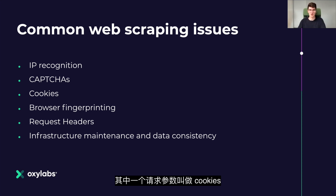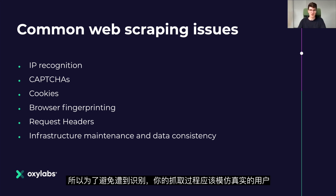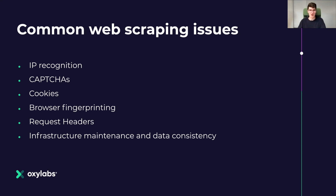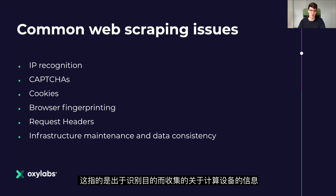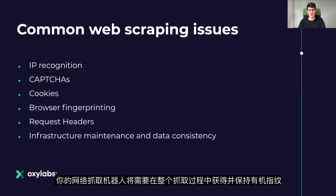One of the request parameters is called cookies. A normal user rarely goes to a specific website directly — it usually comes from a search engine or an ad — so to avoid being recognized, your crawling process should mimic a real user. Companies need to acquire and manage cookies to maintain high scraping success rates. Another common web scraping issue is browser fingerprinting, which refers to information gathered about a computing device for identification purposes. Any browser will pass on data about your device to the website, such as operating system, language, hardware present, and other parameters. Your web scraper bots will need to acquire and maintain organic fingerprints throughout the scraping process.